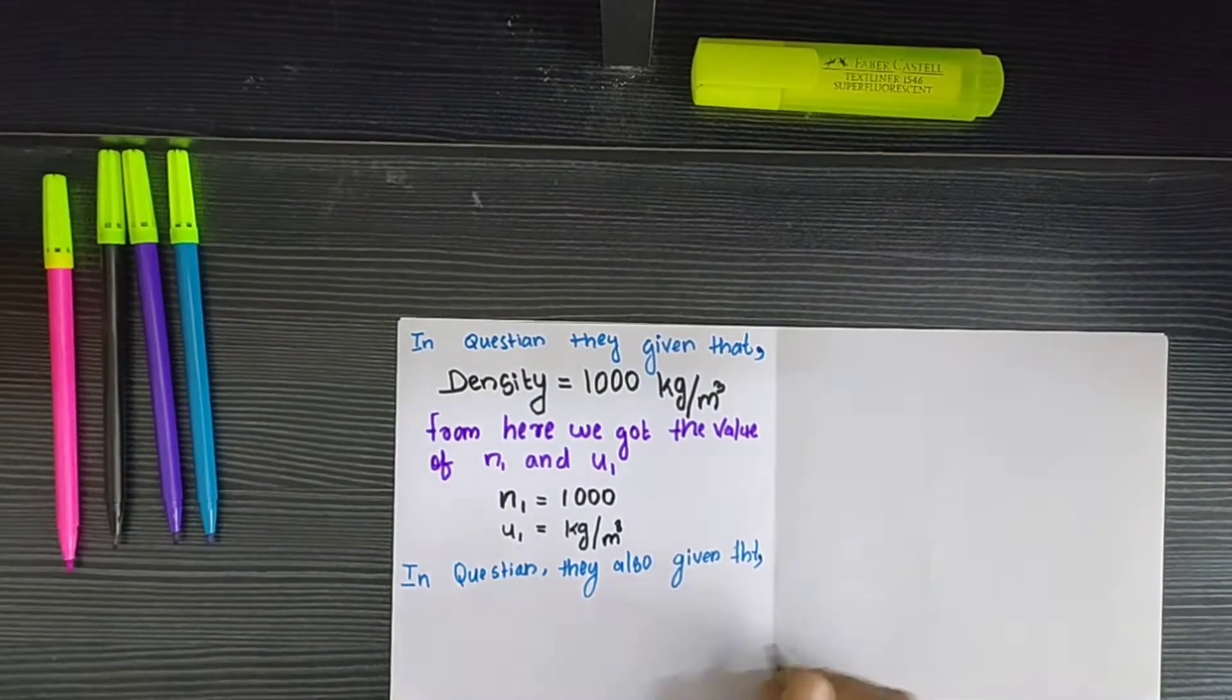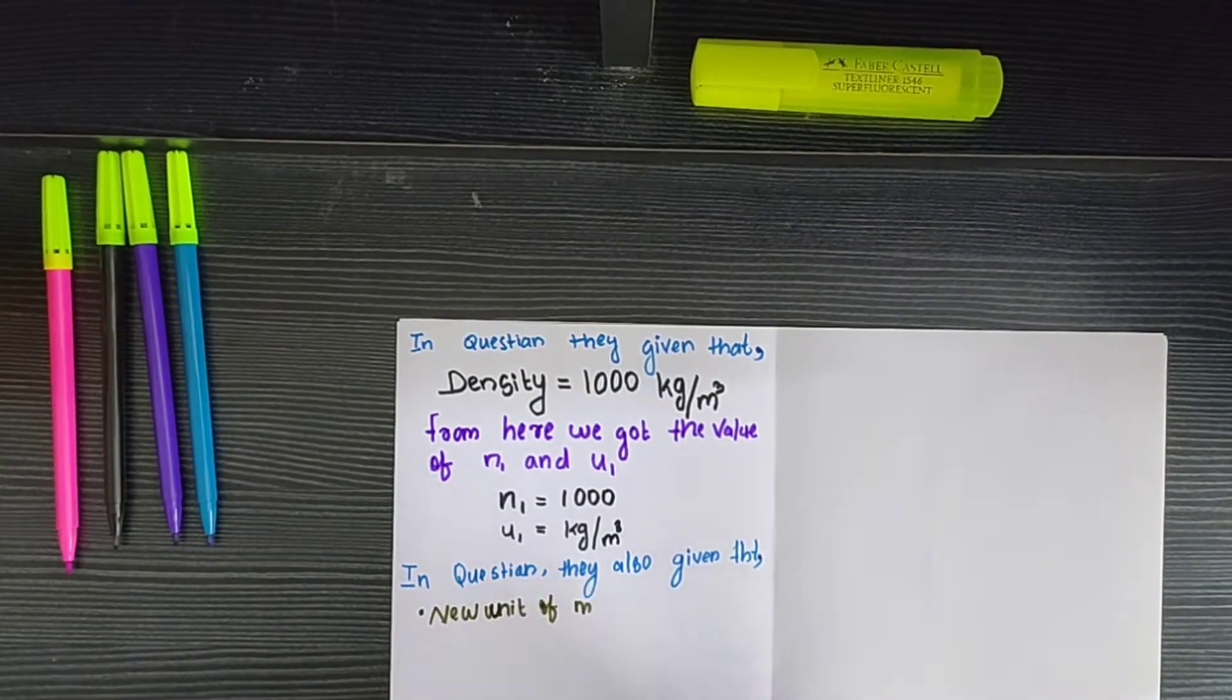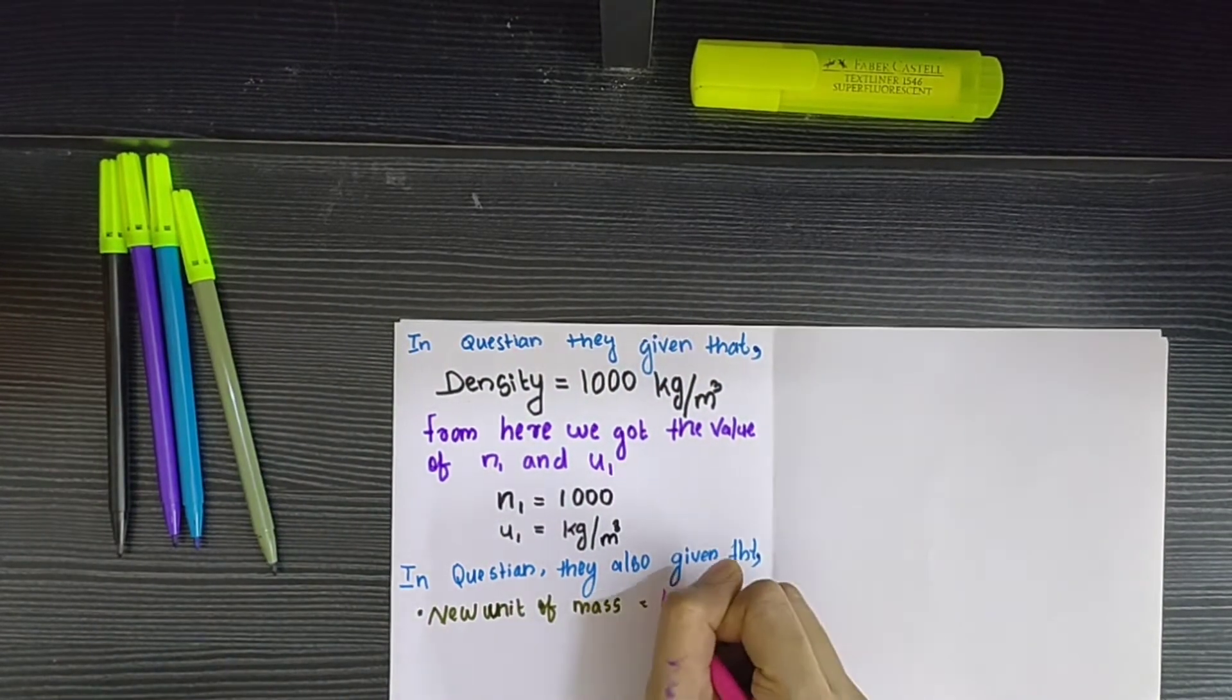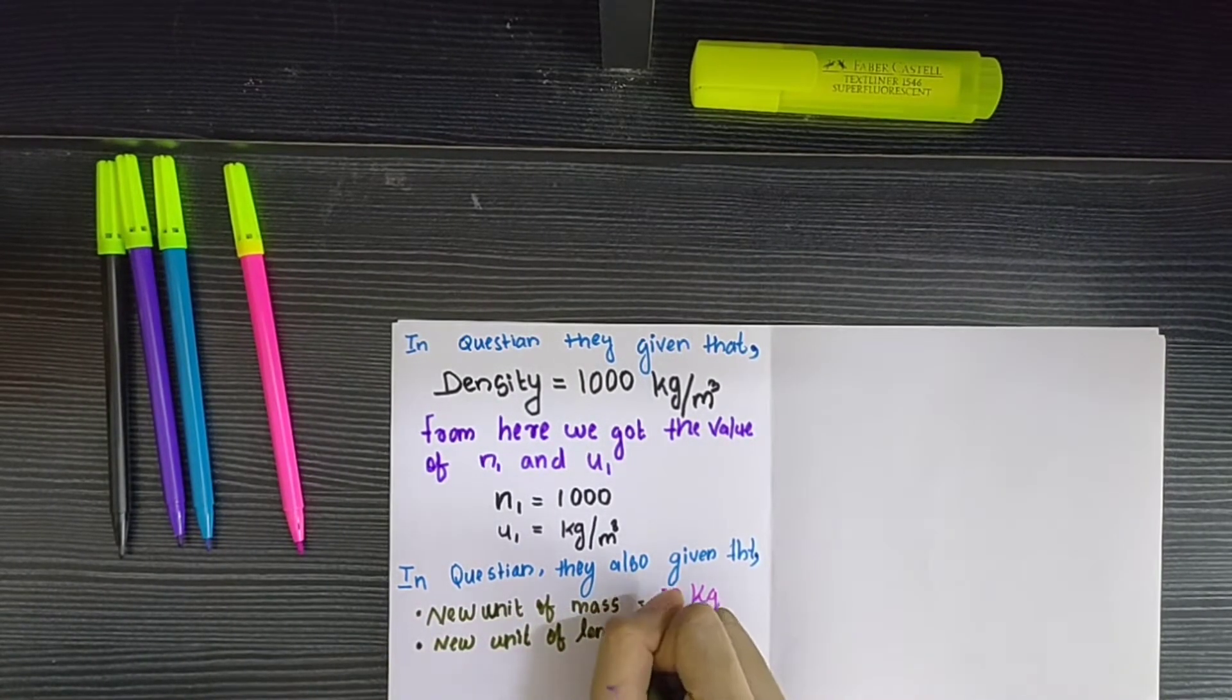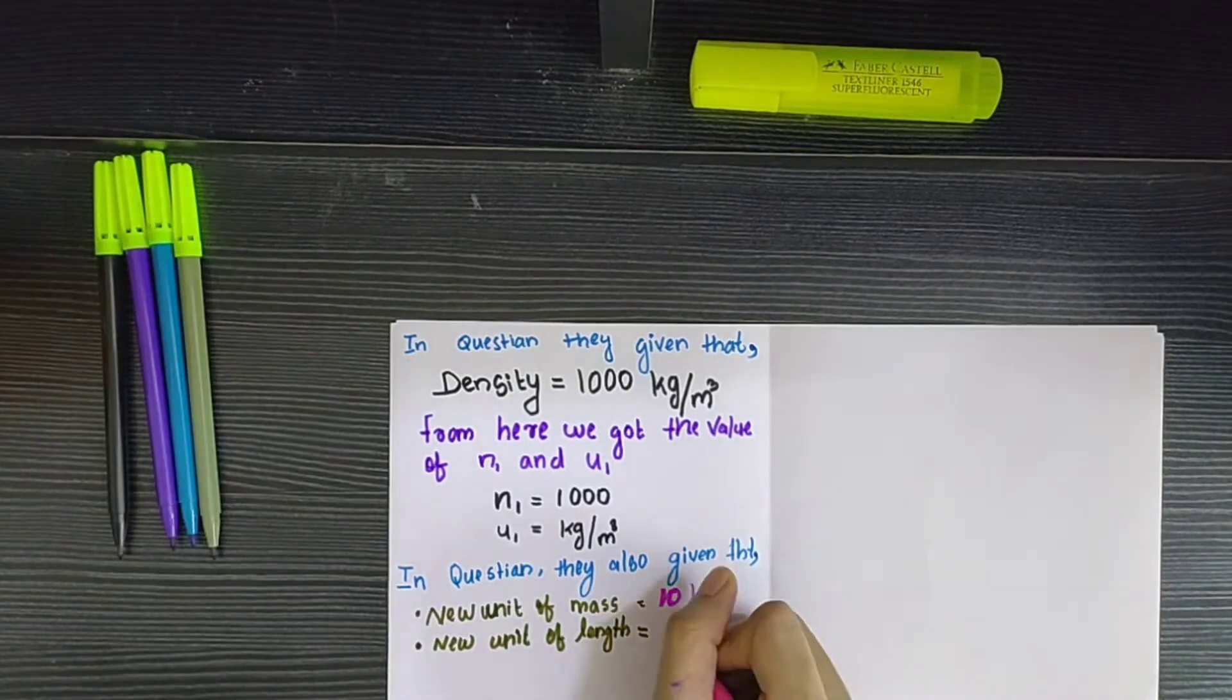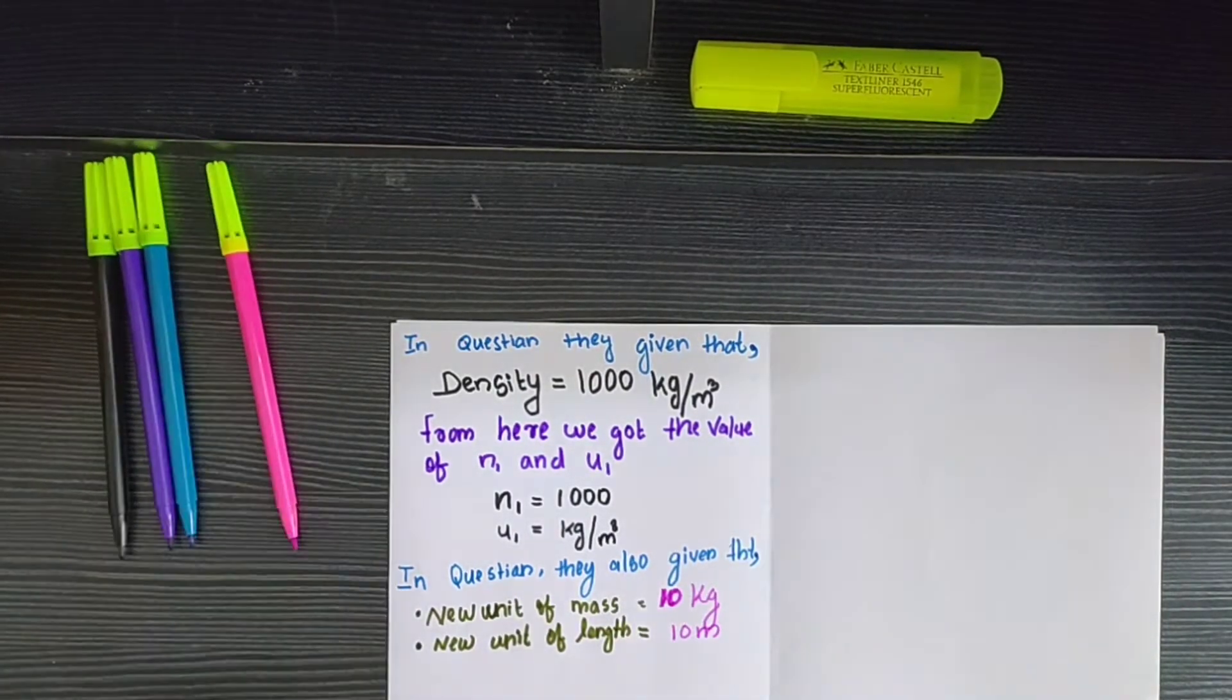the new unit of mass is equal to 10 kilograms, the new unit of length is equal to 10 meters. So they given the new unit of mass and also the new unit of length.